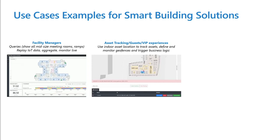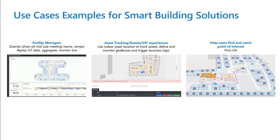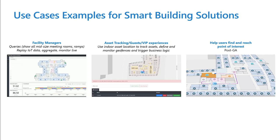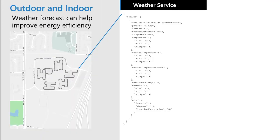We also have asset tracking to provide tracking of devices and define and monitor your fences in your buildings. This can help you trigger business logic, for example in a laboratory or a meeting room. We are working on a wayfinding feature to provide users search and routing for indoor mapping — it will help users find the fastest route from one point to another. You can also leverage Azure Maps services like the weather service to improve energy efficiency; for example, if it is cold outside, there is no need to run the air conditioning system, so it can automatically turn off.